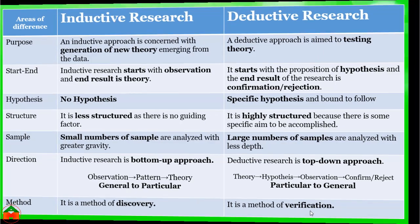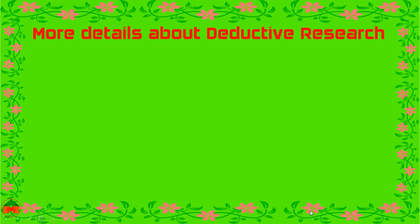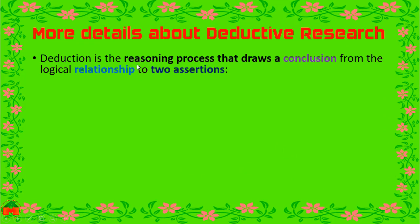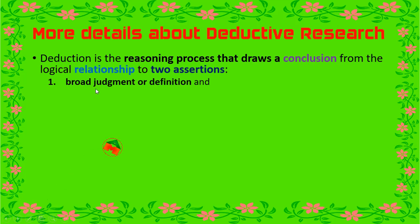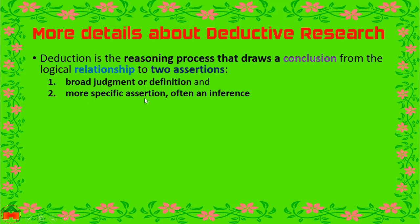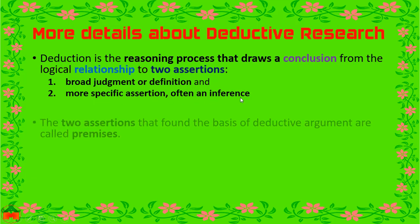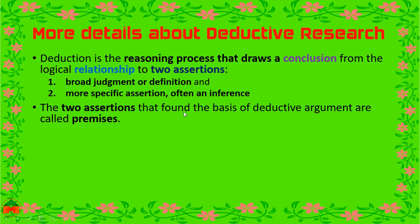Now we can see more details about deductive research. Deduction is the reasoning process that draws a conclusion from the logical relationship of two assertions. One assertion is known as a broad judgment or definition, and another is a more specific assertion, often known as an inference or conclusion. The two assertions that form the basis of a deductive argument are called premises.